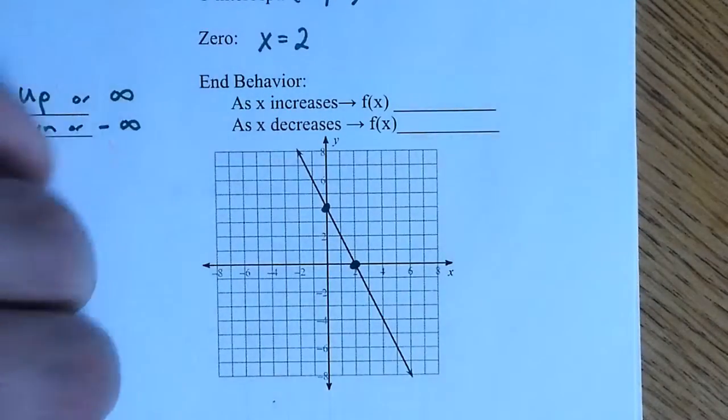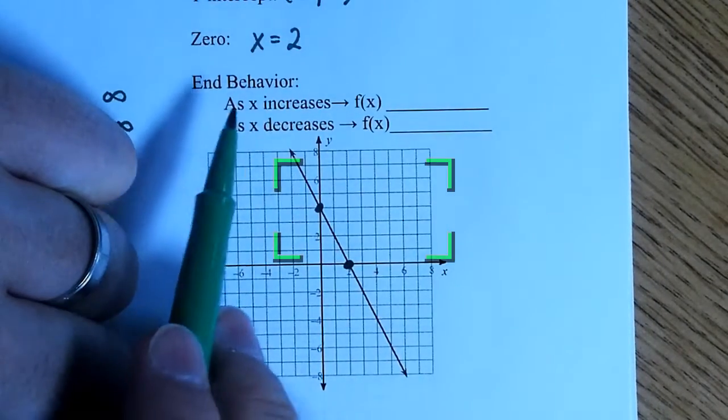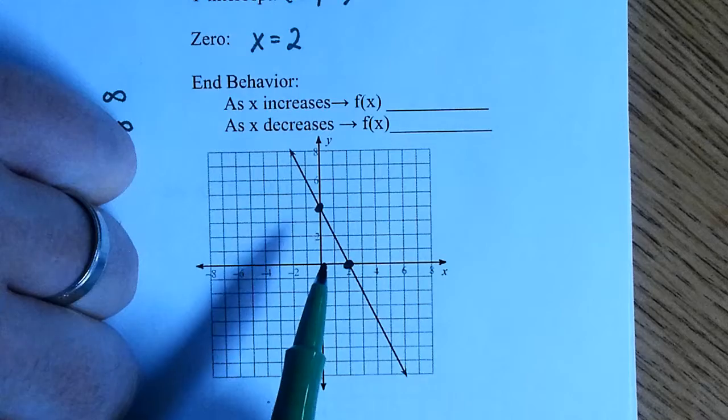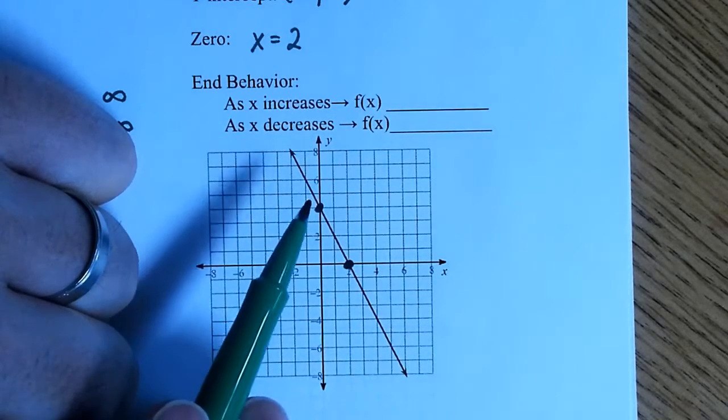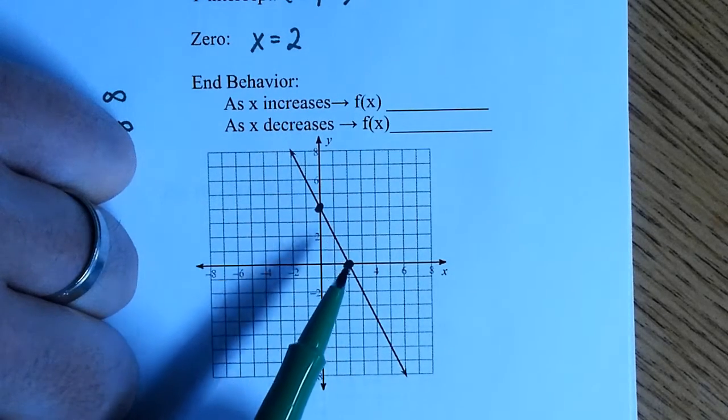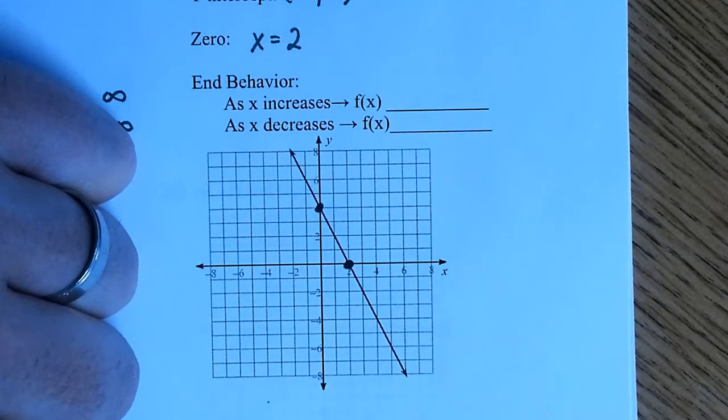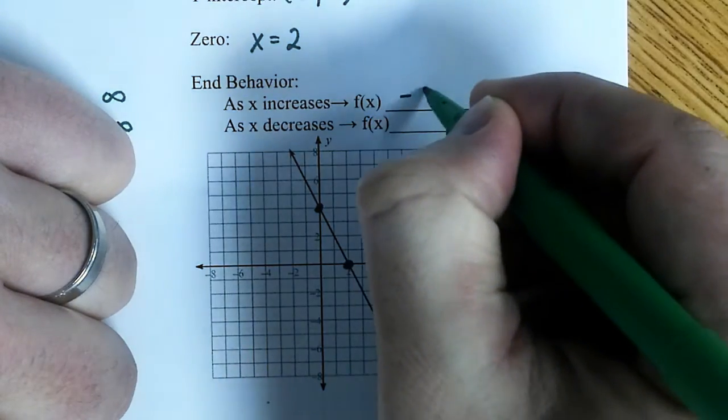So, let's take a look at this one right here for the end behavior. As x increases. So, as x increases is the right side. Are we okay with that? What's going on? If I move right on my graph, where am I going? Down. What would that be? Negative infinity. Good.